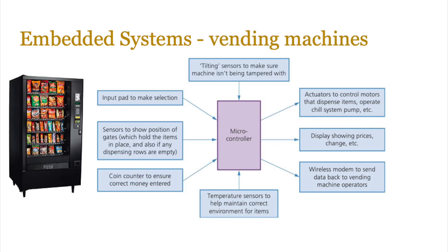A vending machine is another example of an embedded system. It could have an input device such as a touchscreen or keypad, sensors showing position of the various gates where objects are, coin counters, and temperature sensors. There might be a wireless modem to send data back to the operator, a display showing prices, change, and selection choices. Actuators might control the motors that dispense items or operate the pumps that keep the machine cool or hot. There might also be tilting sensors to detect tampering, and perhaps an alarm. All of these input and output devices are part of the embedded system, including the microcontroller which controls everything.